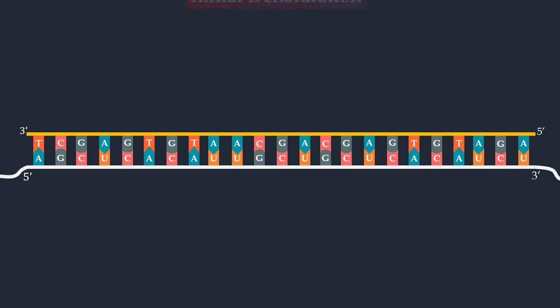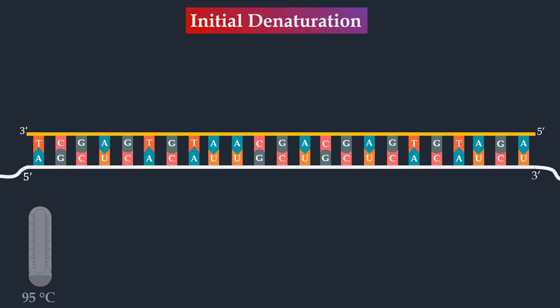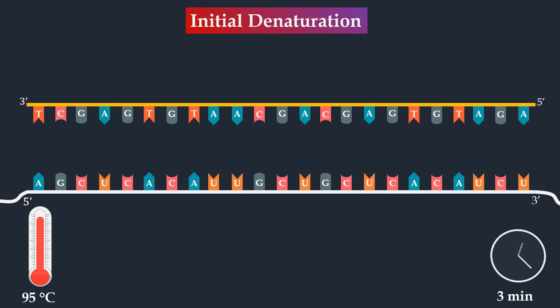Next, an initial denaturation step is applied, causing denaturation of the RNA-DNA hybrids. This step is required for the activation of DNA polymerase and simultaneously the inactivation of reverse transcriptase.